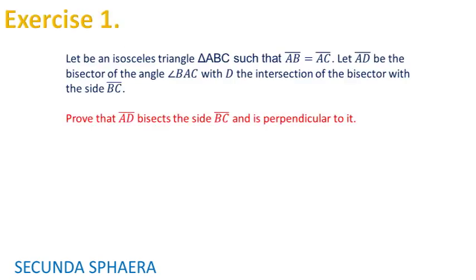For our first problem, let ABC be an isosceles triangle such that the sides AB and AC are equal. Let the segment AD be the bisector of the angle BAC with D the intersection of the bisector with the side BC. We are asked to prove that the segment AD bisects the side BC and is perpendicular to it.